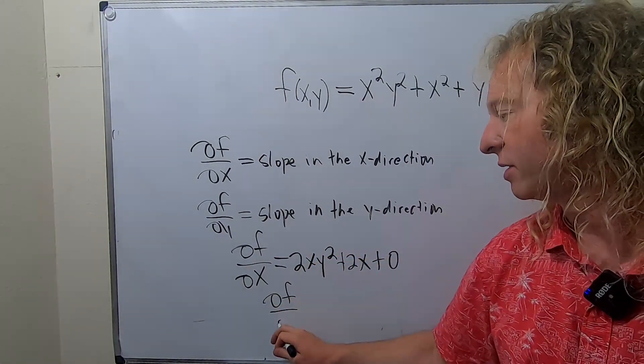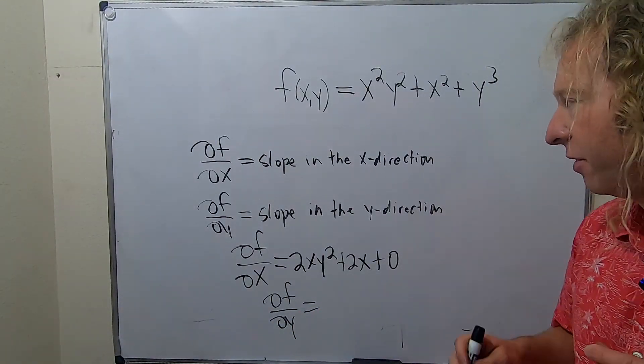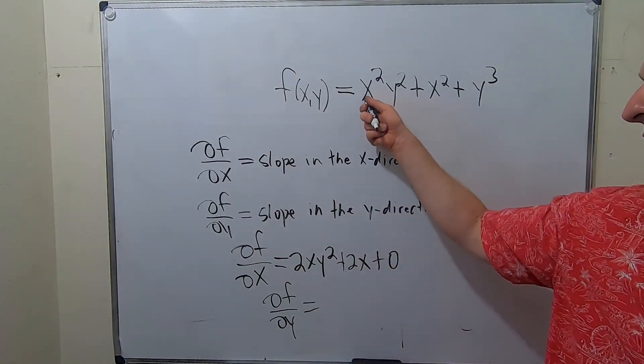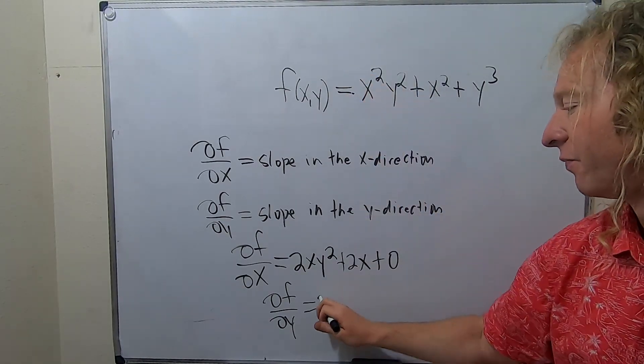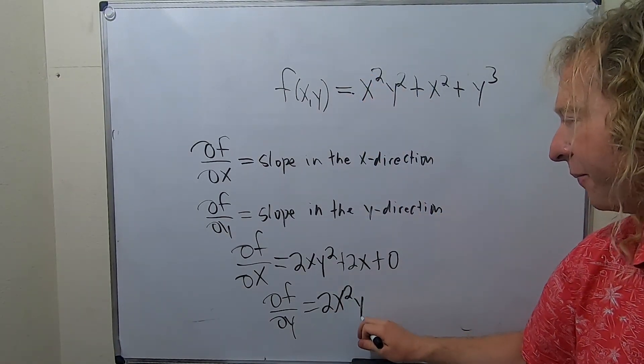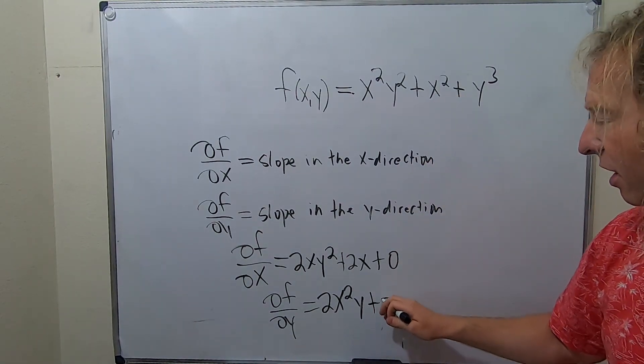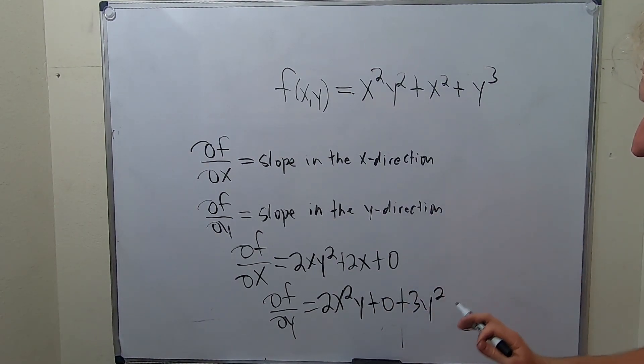Let's go ahead and write ∂f/∂y. Now we're fixing all of the x's, so x is constant. This hangs out, so this derivative is just 2y. We get 2x²y. This derivative is 0 because x is a constant. And this derivative here is 3y². I won't even bother to simplify it. I'll just leave it like that.